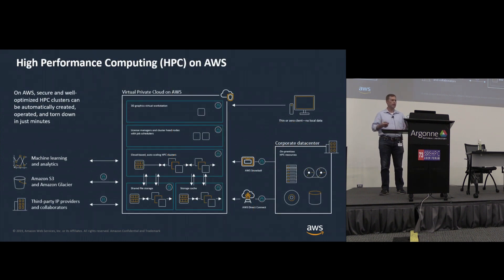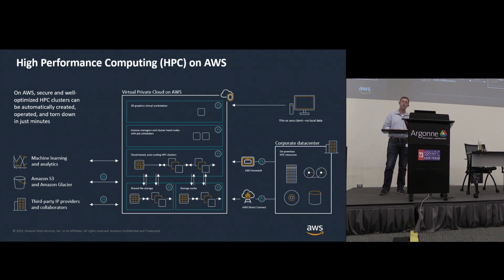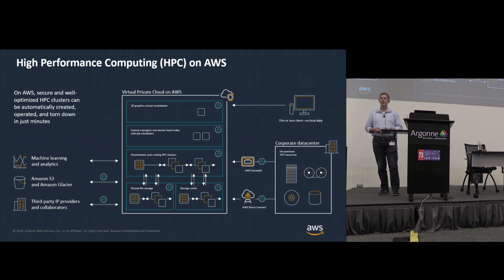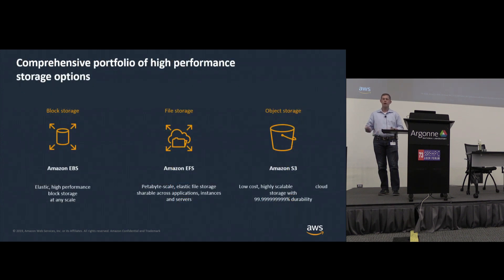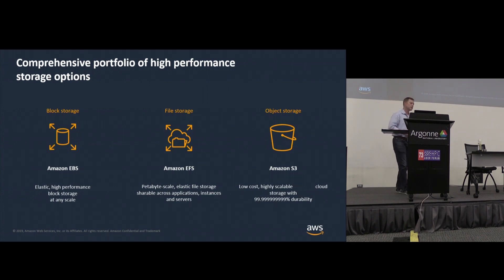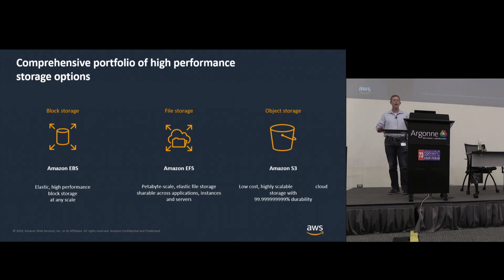So what does the architecture of an HPC system on AWS look like? We've talked about the network and the compute, but you've got to have storage. Our standard storage offerings are EBS (Elastic Block Storage), EFS (Elastic File Storage), and the granddaddy we're known for — S3, or object storage. But for a lot of HPC customers, none of these really fit the bill — they're not high-performant, don't have the IO throughput needed, or they're just too expensive.